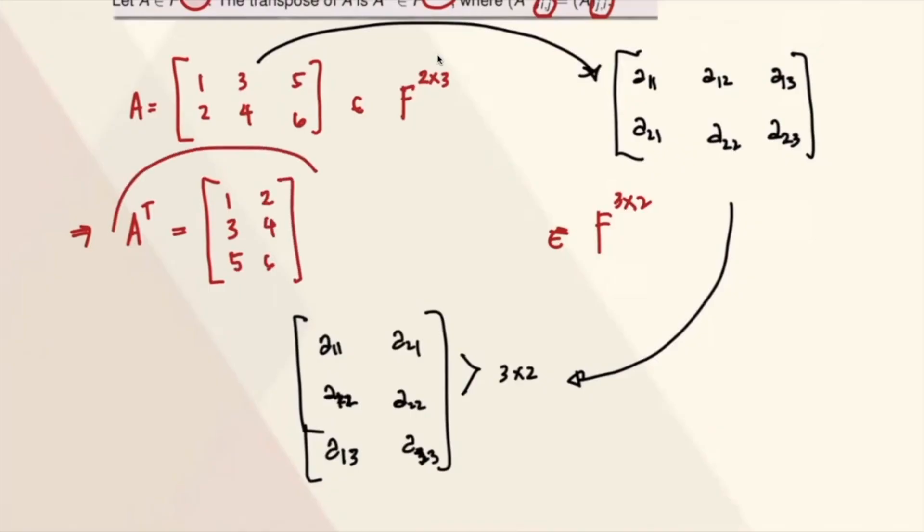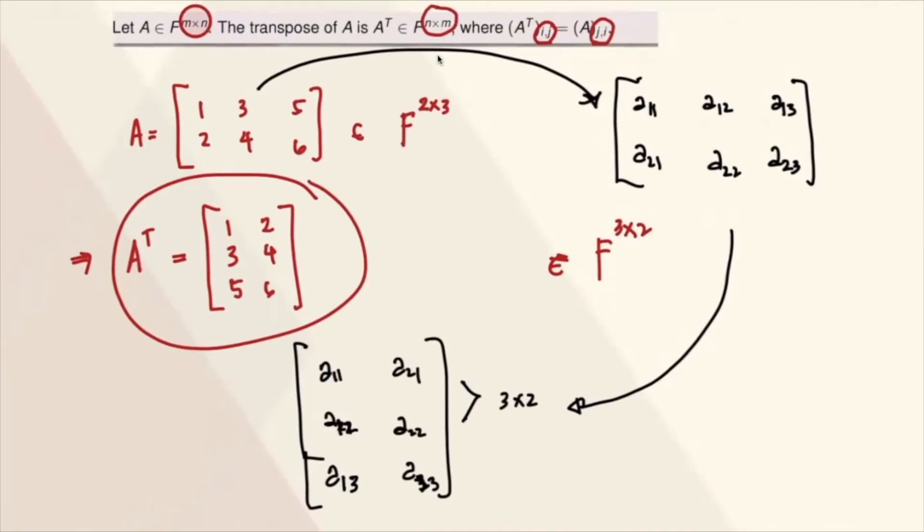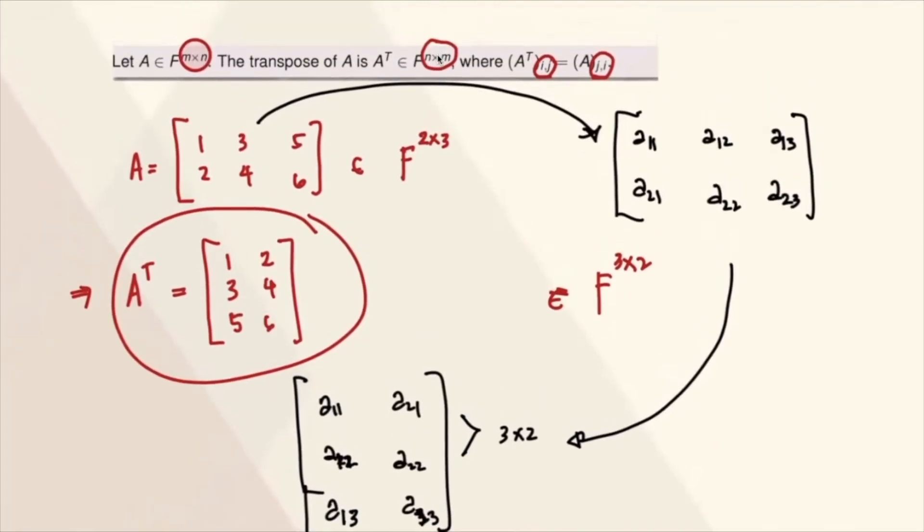So this is now the transpose of your matrix A. So as a remark, ibig sabihin, whenever you have a matrix of size M by N, automatically, nagiging N by M siya. So the only matrix na mariretain yung size is whenever a matrix is a square, of course.